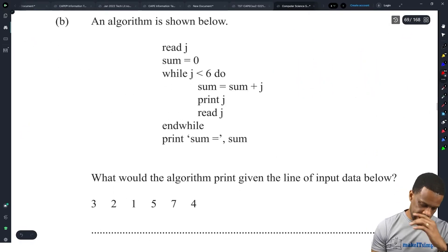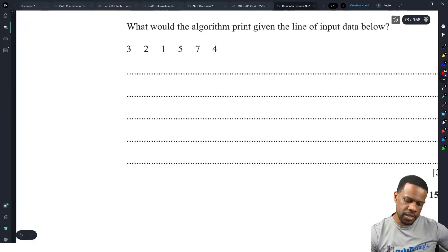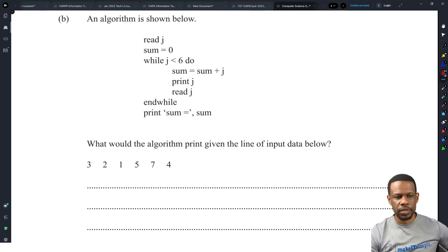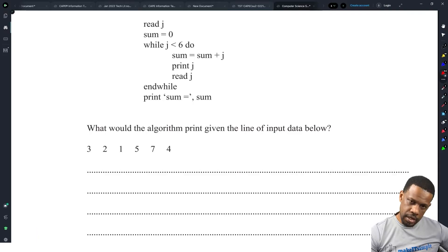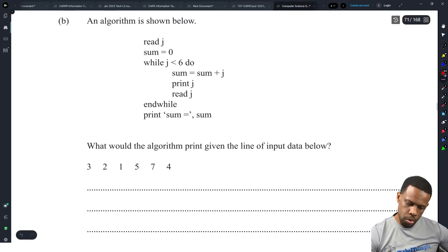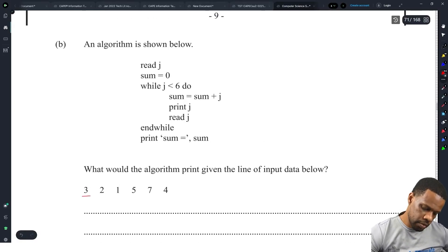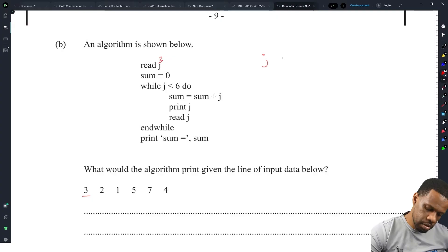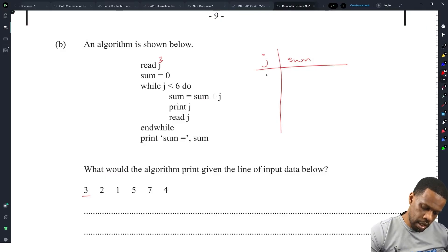Alright, an algorithm is shown below. Read j, sum is equal to zero, while j is less than six, sum is equal to sum plus j, print j. This is a question from another paper. This looks like it could have been from 2014, 2015, 2016. What will the algorithm print given the line of input data below? Let's say we put in a three. Actually I'll just do a trace table for it. J and sum, those are our two variables.